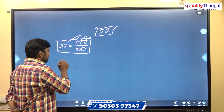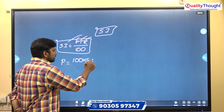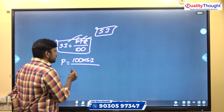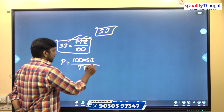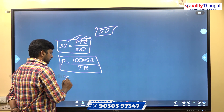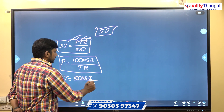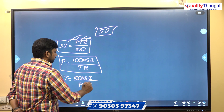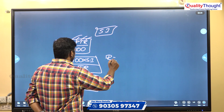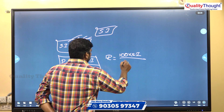If we want to find the principle, the formula is: Principle = 100 × Simple Interest divided by Time × Rate of Interest. And if we want to find the rate of interest, then Rate of Interest = 100 × Simple Interest divided by P × T.